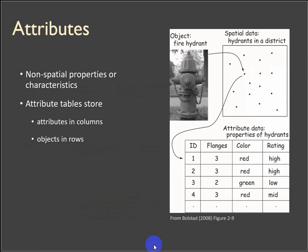The attributes are the cool part. These are non-spatial properties or characteristics that describe each one of those coordinate locations. We can store attributes in columns — these are the descriptions. For example, with fire hydrants, each one might have an identifier and we can collect information about each hydrant. The row is the object, the feature, the location. It could be a line segment or a dataset of alpine lakes where each row represents one lake and the columns represent descriptions of each lake. That's how spatial data is organized in vectors.